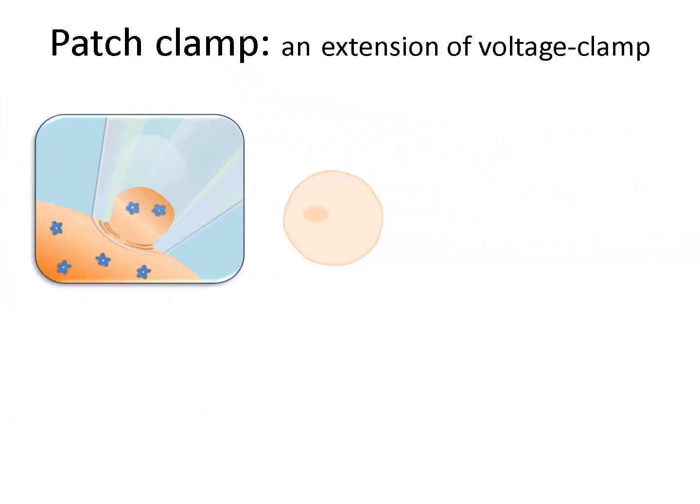The work of Erwin Neher and Bert Sakmann in the late 1970s and early 1980s led to an extension of the technique which revolutionised ion channel research. The new technique was called patch clamp, and the reason for this is illustrated on the slide.